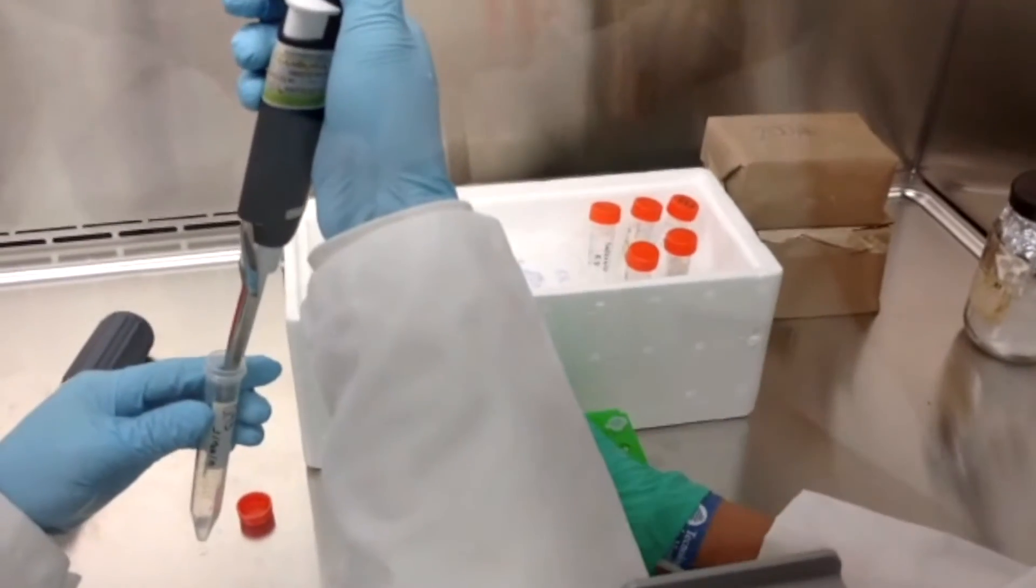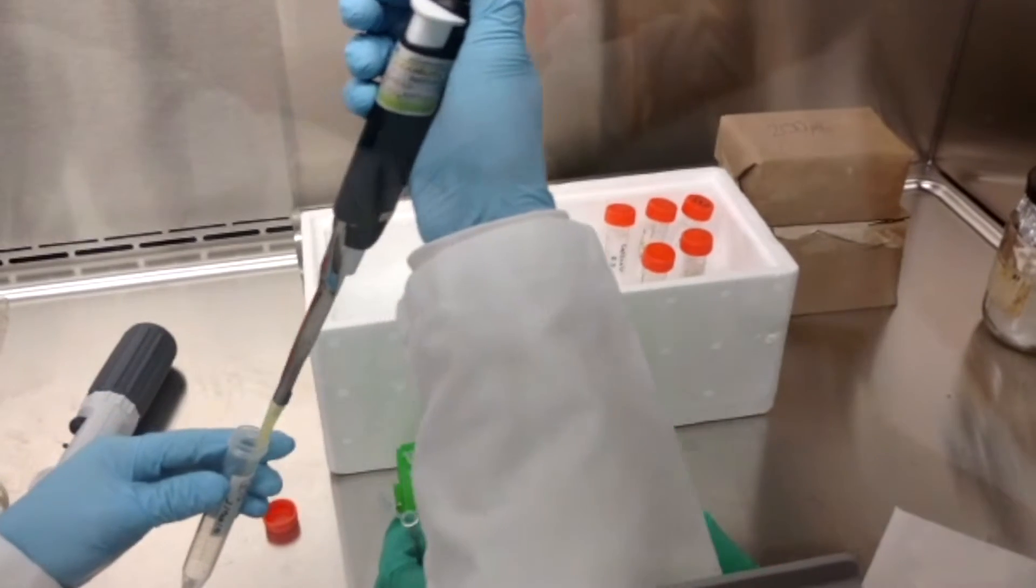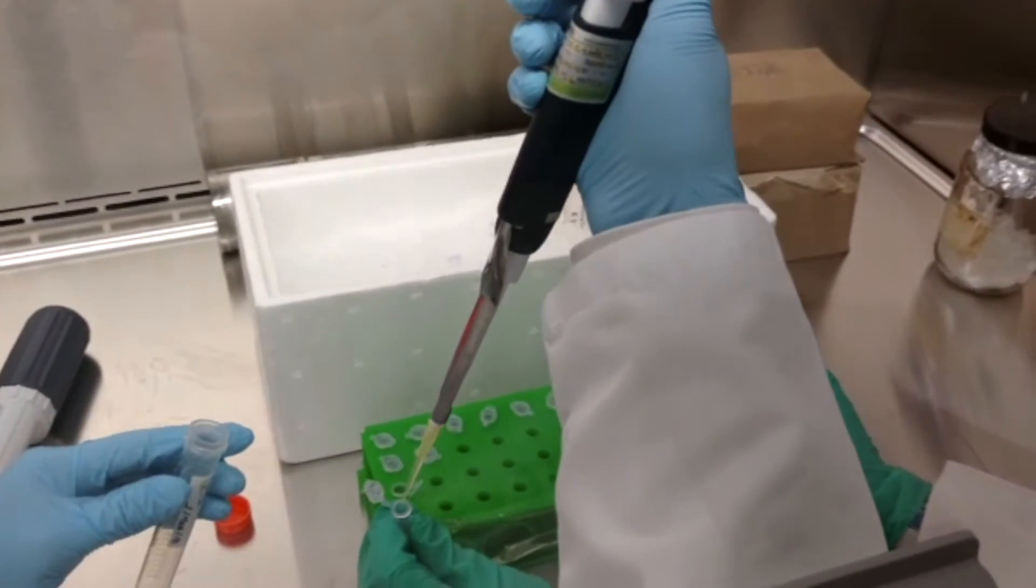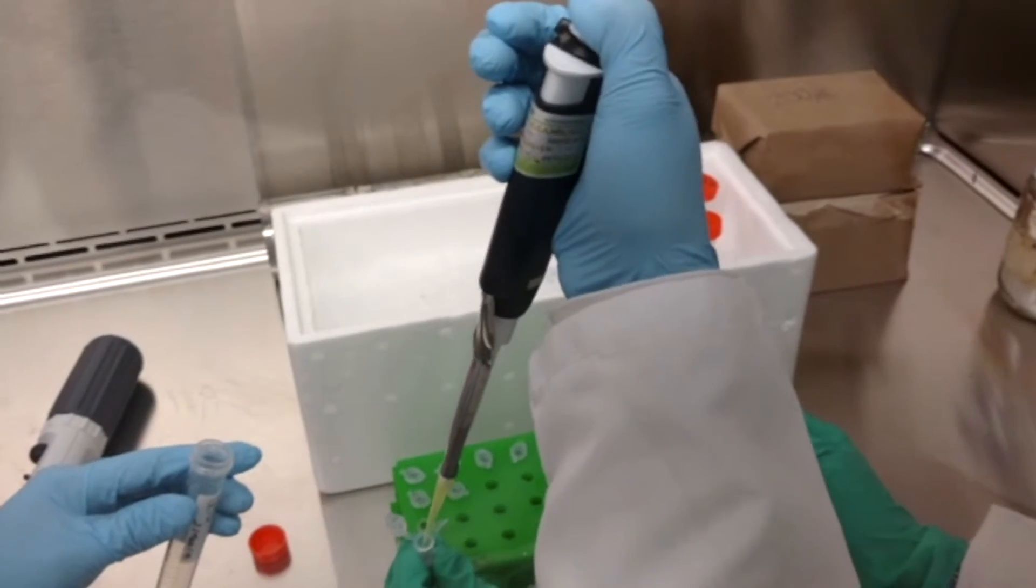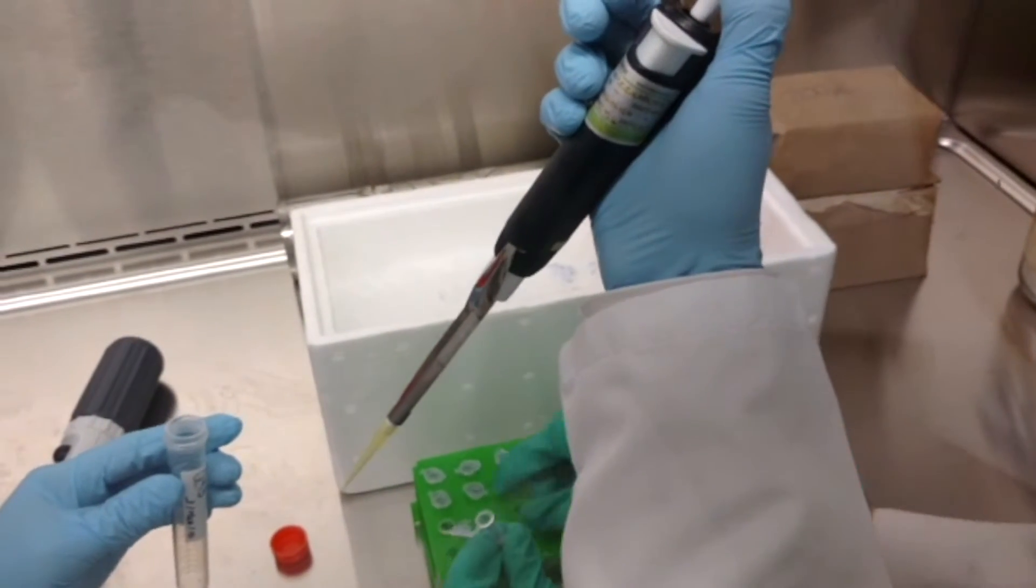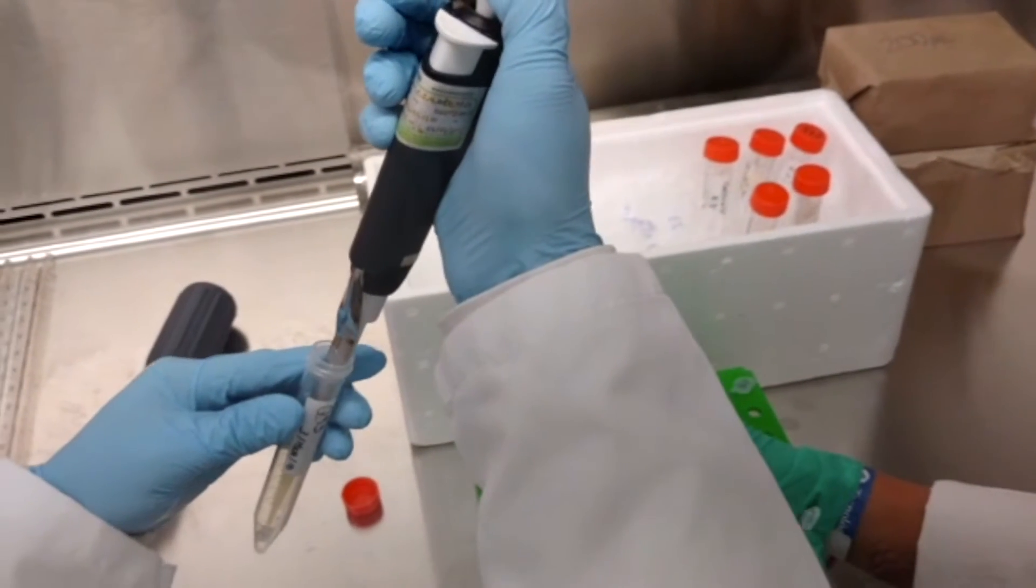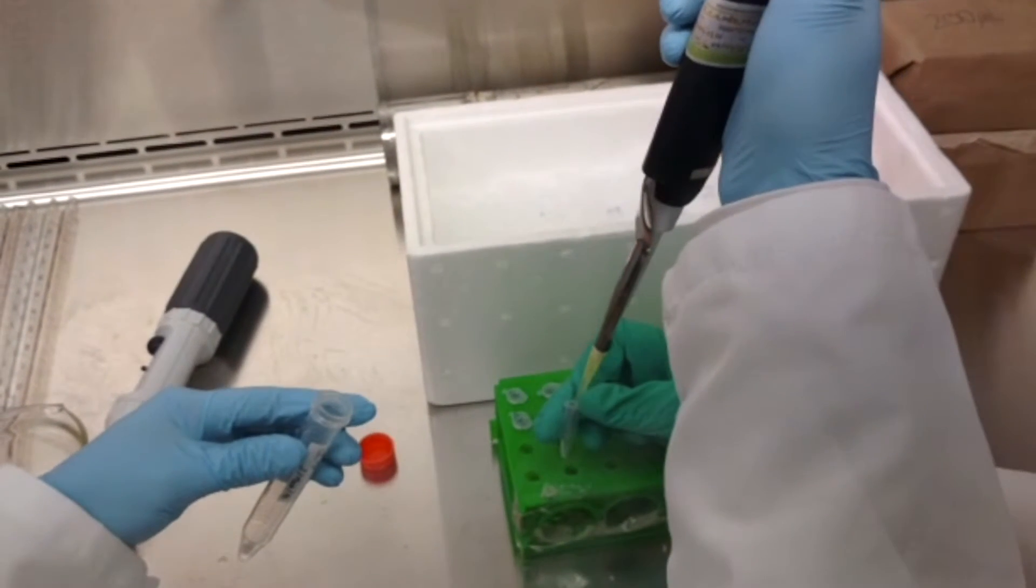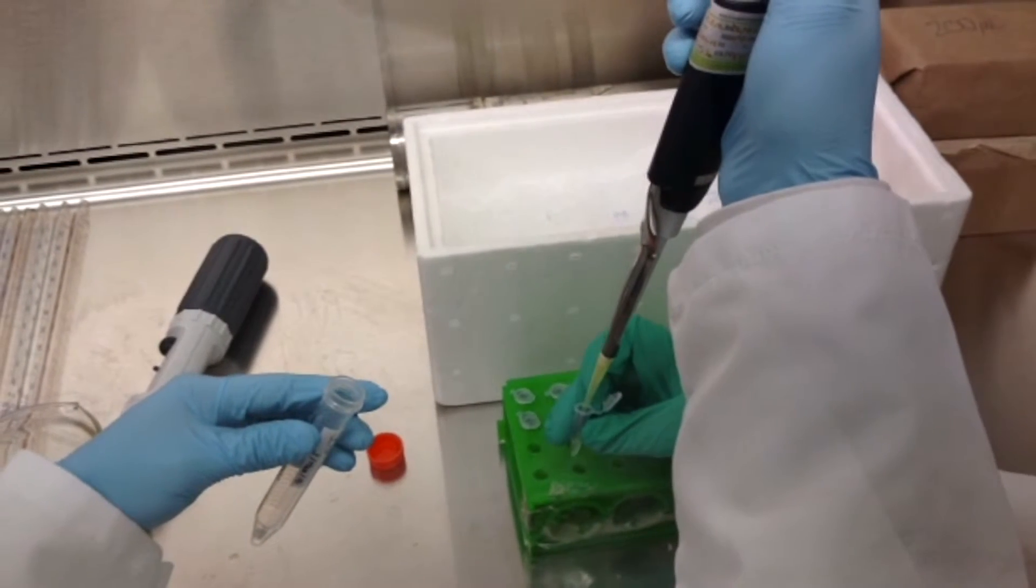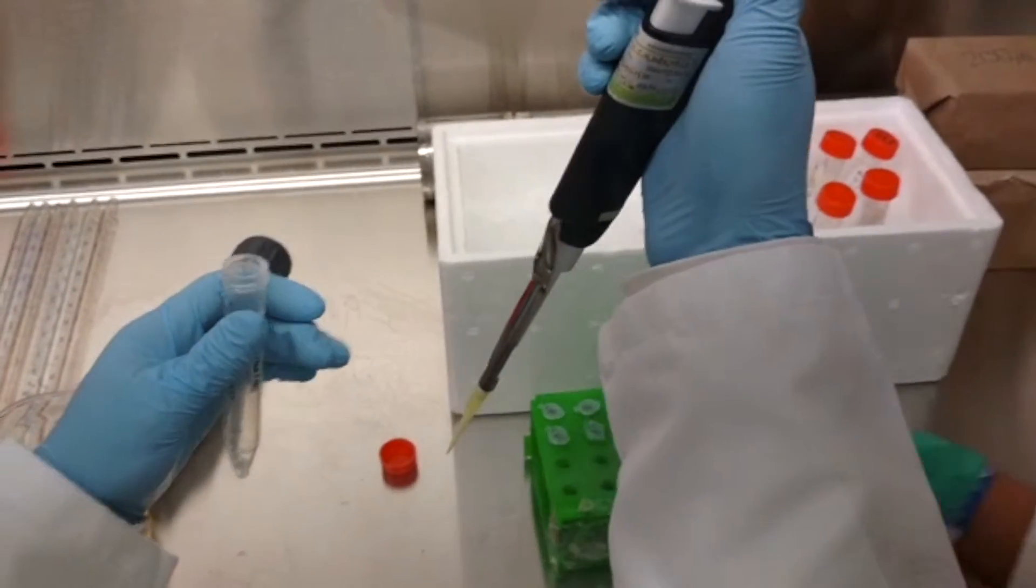Although every transformation requires high quality plasmids, the samples may differ in salt content depending on the method. For electroporation, DNA must be in a low ionic strength buffer like TE buffer or biology grade water. If the sample is contaminated with salts it can cause an electric arc, damaging both the sample and the machine. For chemical transformation, it is not as important to have a completely salt-free sample since that method does not involve electrical charges.